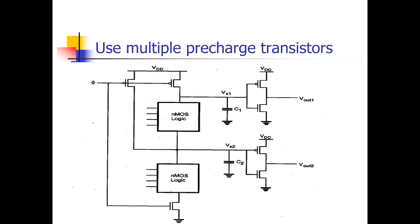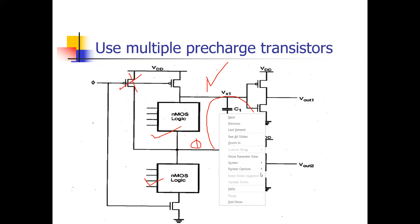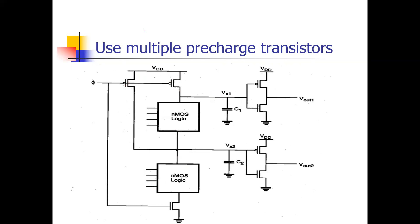The second solution is to use multiple pre-charge transistors — that is, a separate pre-charge transistor for each stage. For phi equals 0, both stages are precharged to 1, so there is no chance of charge sharing. In the previous case, only one pre-charge transistor existed, so only the first stage was 1 and the second stage was 0, causing the charge to be shared. Using multiple pre-charge transistors solves the charge sharing problem.